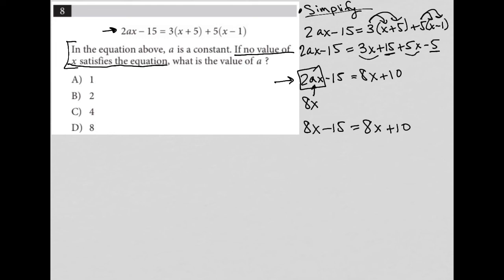There's no X value that will ever make that true because we're subtracting 15 on this side and adding 10 to whatever the answer is after substituting X in. We're subtracting 15 here, adding 10 here. There's no way these two things can ever be equal. So I want 2AX to equal 8X.